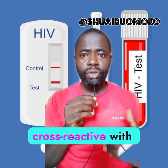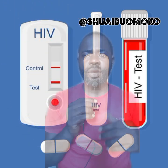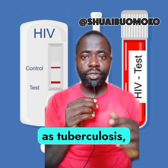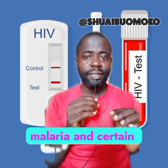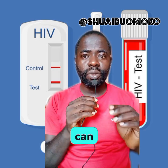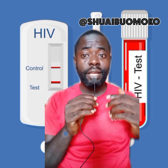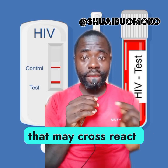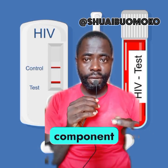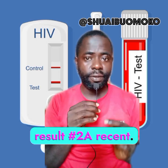Number one: cross-reactivity with other antibodies. Some infections, such as tuberculosis, malaria, and certain autoimmune diseases, can cause the body to produce antibodies that may cross-react with HIV test components, leading to a false positive result.